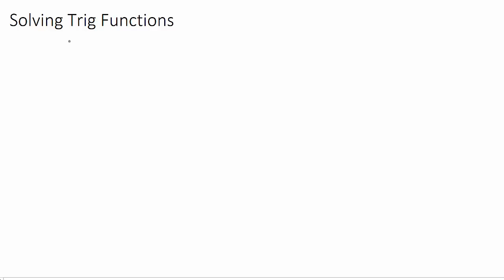A simple example of a trig function that needs to be solved is if we have sine of x — this might have a bracket around the x, or it could be a theta, either or, some variable — and it's going to equal some fraction. So sine of x is equal to a half.